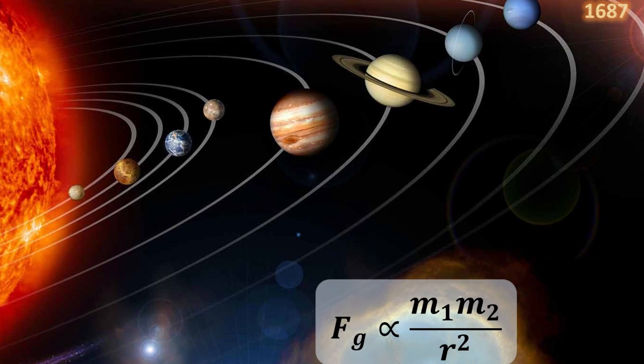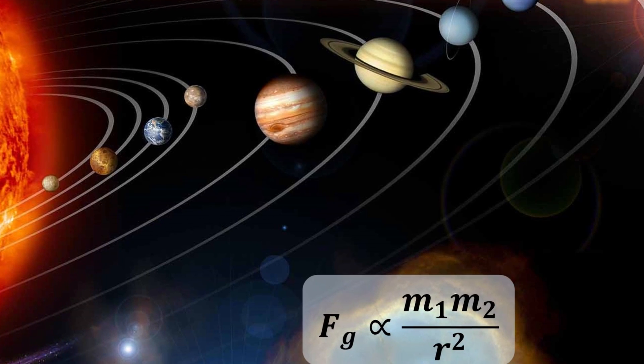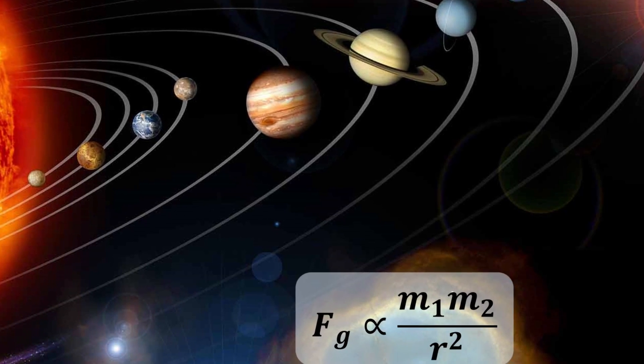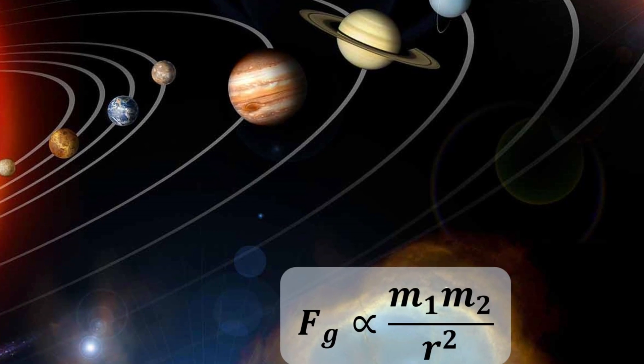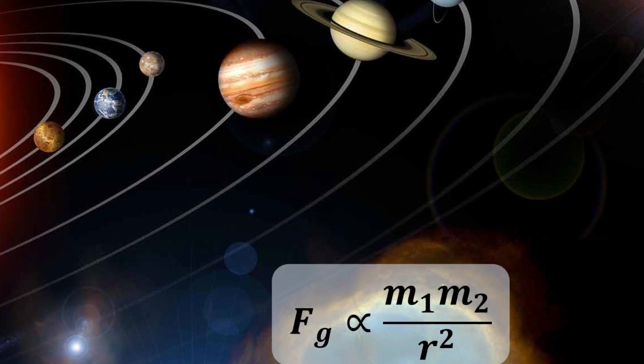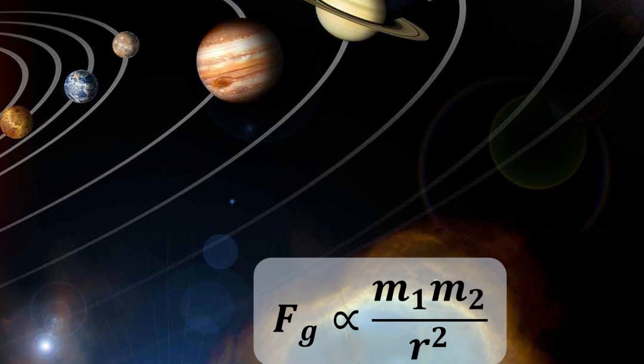Newton also discovered the universal law of gravitation, which states that every particle attracts every other particle in the universe with a force directly proportional to the product of their masses m1 and m2, and inversely proportional to the square of the distance between their centers r. His laws of gravitation and motion allowed him to explain the elliptical orbits of planets as described by Kepler.